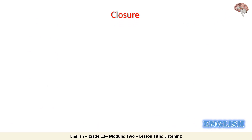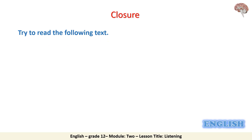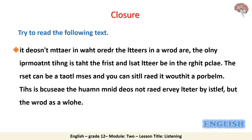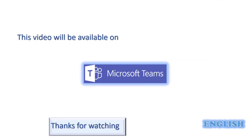Now we reach the closure. Here is a brain teaser — a text written in an unusual way. Please pause this video and try to read it. It says: it doesn't matter in what order the letters in a word are. The only important thing is that the first and last letter be in the right place. The rest can be a total mess and you can still read it without a problem. This is because the human mind does not read every letter by itself, but the word as a whole. This is the end of this video. Thank you very much for being attentive, and remember that this video will be available on Microsoft Teams. Goodbye.